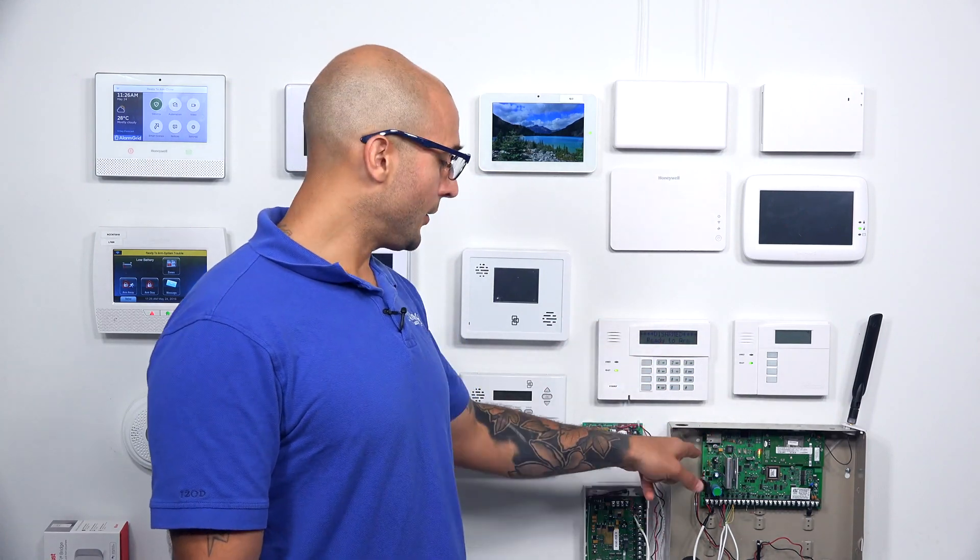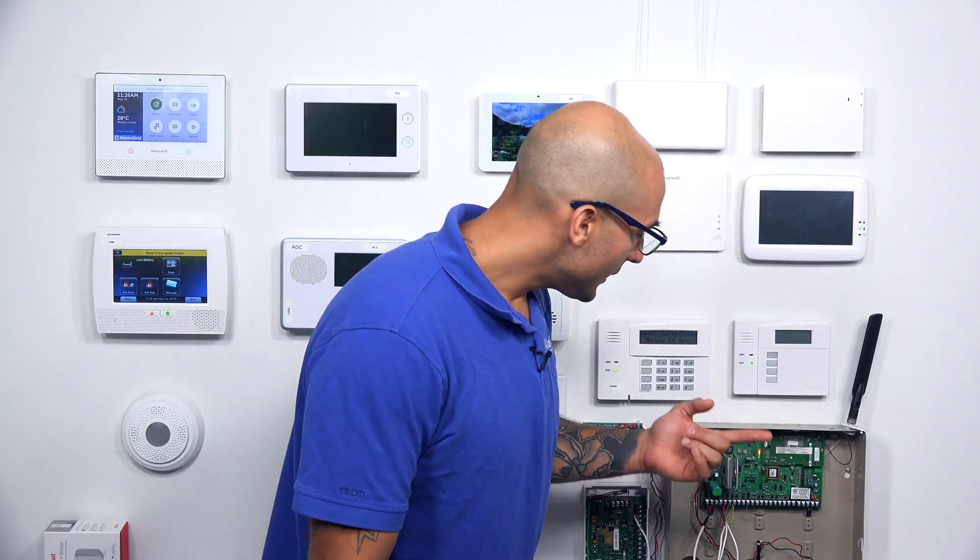As you may know, the 21iP does have a built-in Ethernet communicator. You can also install the proprietary Vista GSM 4G communicator right onto the board. The Verizon LTE-XV communicator is going to let the system connect to the LTE network that Verizon has, which is faster and more reliable than the older 4G network.